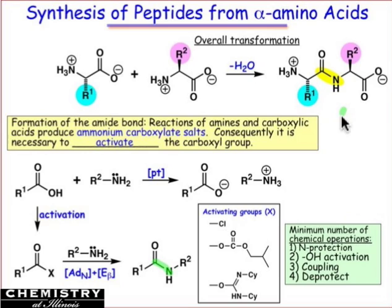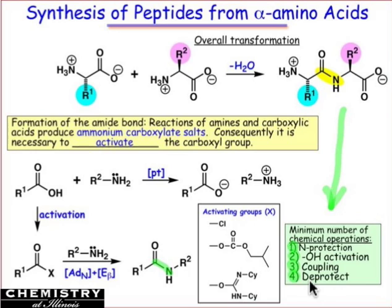To make that dipeptide, we're going to carry out a sequence of four steps. It'll involve N-protection so that we can block the amino group we don't want to react. It'll involve carboxylic acid activation. It'll involve a coupling step followed by deprotection, where we unveil the amino group we want on the terminus of the chain.